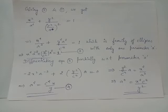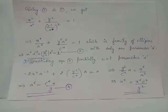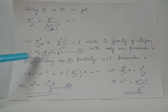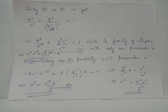Since we wish to find the envelope of this family of ellipses with a as the parameter, we partially differentiate equation 3 with respect to a. The partial derivative of a⁻² with respect to a gives −2a⁻³, so the derivative of x²·a⁻² is −2x²·a⁻³. Similarly, the partial derivative of the second term with respect to a is 2a·y²/c⁴, and the derivative of the constant 1 is 0. Note that x and y are treated as constants.